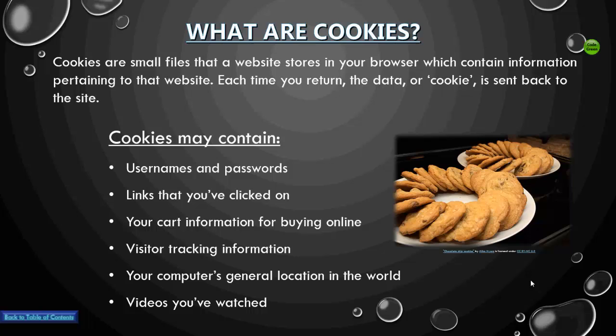Cookies can contain all sorts of information, such as usernames and passwords, links that you've clicked on, items that you've bought previously, advertising information based on links that you've clicked on, or your geographical location — your computer's general location in the world — videos that you've watched, all sorts of stuff.